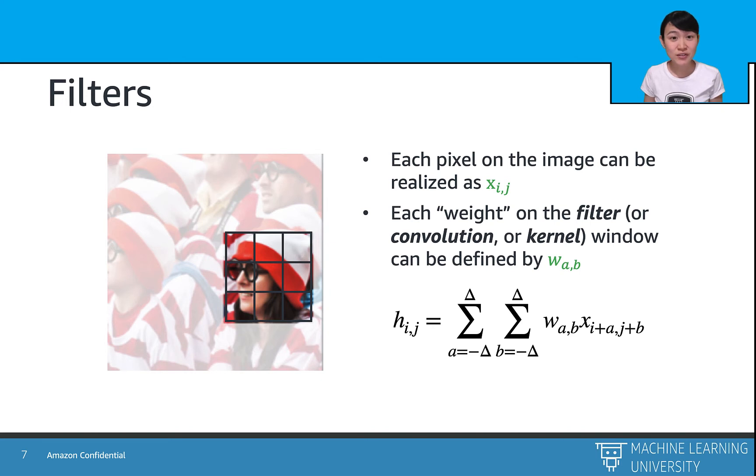Also call the filters as a convolution or convolutional kernels. And with the 2D convolution windows, the hidden layer is calculated within the plus and minus delta range, both horizontally and vertically as we slide in the windows.